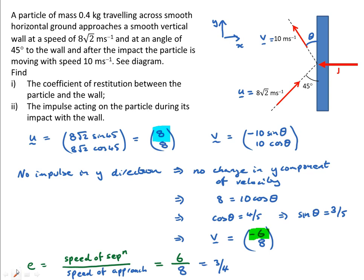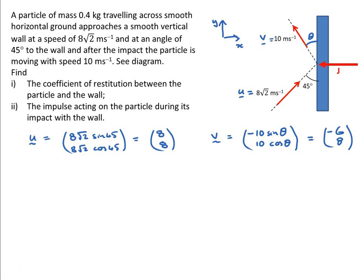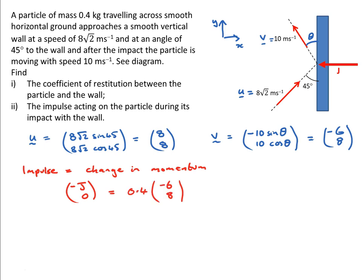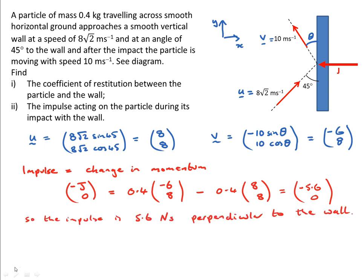We now calculate the impulse acting on the particle during the impact. Using impulse equals change in momentum in vector form, the impulse vector (−J, 0) equals the final momentum 0.4 × (−6, 8) minus the initial momentum 0.4 × (8, 8), which gives (−5.6, 0). So −J = −5.6, meaning J = 5.6, and the impulse is 5.6 newton-seconds perpendicular to the wall.